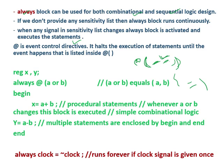Let me give you one example. If I write: always @(A or B), with reg variables X and Y — here A and B are the sensitivity list signals. I can also write A, B using a comma instead of 'or'. So if there is any change in A or B, whatever is written inside the begin and end part will be evaluated and executed.